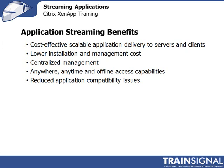Anywhere, anytime offline access capabilities are very important. You can access the application stream wherever you want, and the added benefit is that you can access it offline. If you're streaming an application to a Citrix XenApp client or plug-in on your laptop and want to take it with you to run Word on a plane, you can cache the application locally and run it for a period of time while disconnected from the network. There are also reduced application compatibility issues because the applications aren't installed on the operating system — they're not modifying it, so there are no DLL conflicts, application errors, or compatibility issues.